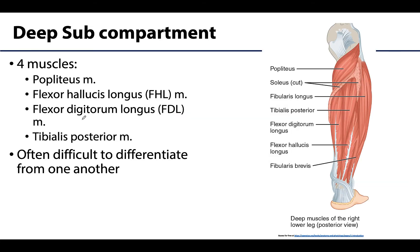Now let's move on to the deep sub-compartment of the posterior compartment of the leg. These muscles are considerably smaller and often quite difficult to discern — the differences between the muscle bellies in dissection can be challenging. I will introduce the names and talk about the actions, but I'm going to be a little less concerned regarding identification. I love all muscles except for the deep sub-compartment of the posterior leg, mainly because it is quite difficult to differentiate these muscles.